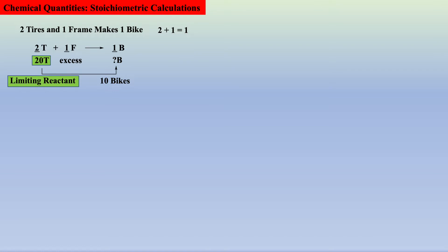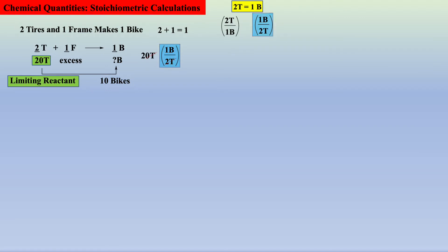However, it is best to envision the calculation in the following way. Two tires equal one bike, which allows two conversion factors to be imagined from the equality, as discussed in the previous video. Starting with 20 tires and converting to bikes by multiplying with the correct conversion factor — one bike over two tires — tires cancel, which affords the answer 10 with the desired units: bikes.